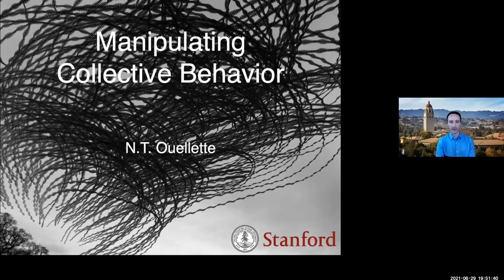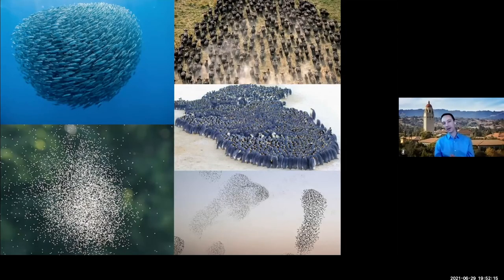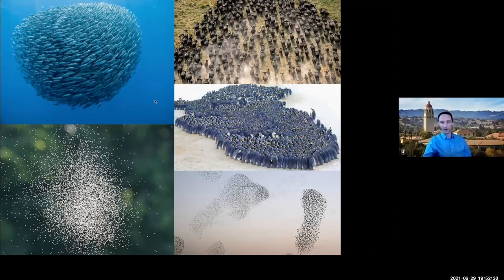Here are some pretty pictures. These are the kinds of things we've been thinking about in my group for about a decade: groups of animals that move often in some coordinated fashion. This happens all over the animal kingdom at just about every size, scale, and biology. In the lower right, these are flocks of starlings — animals moving in three-dimensional space, unconstrained, in a directed fashion. Upper right, wildebeest on the Serengeti, moving in the same direction but constrained to two dimensions.